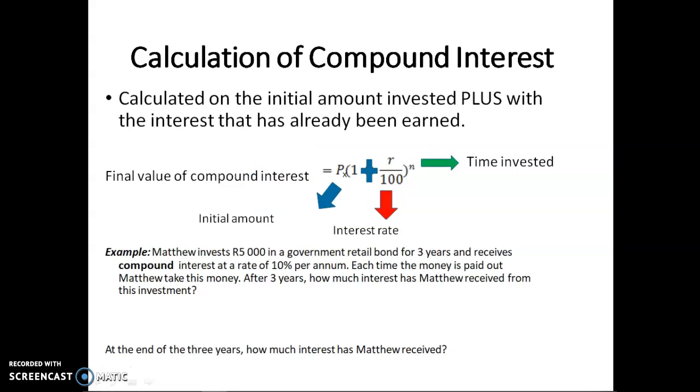You will also need to know how to calculate compound interest. Remember, this is calculated on the initial amount invested, plus the interest that has already been earned. Again, you need to know this formula, and the formula is P, for principal amount or initial amount, times, open your brackets, 1 plus the interest rate R over 100, close your brackets.